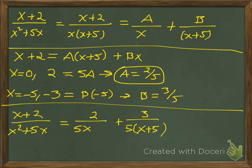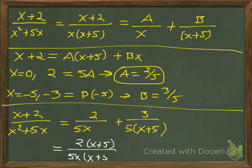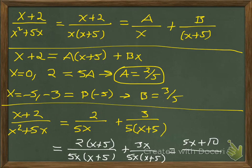That's the partial fraction decomposition. If you wanted to verify, you could find a common denominator — multiplying the first term by (x+5) and the second by x — giving [2(x+5) + 3x] all over 5x(x+5), which simplifies to (5x+10)/5x(x+5), and dividing by 5 gives (x+2)/x(x+5). This confirms the decomposition is correct.